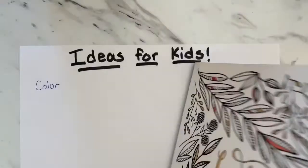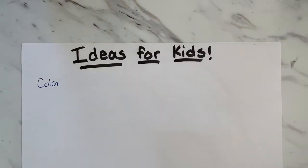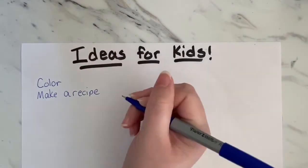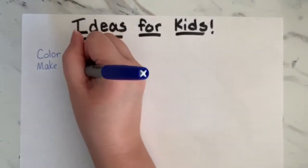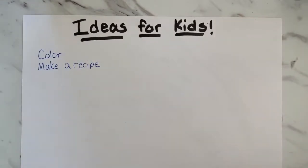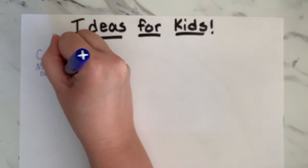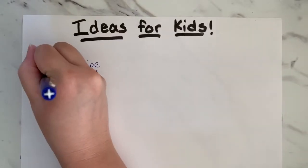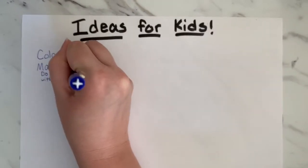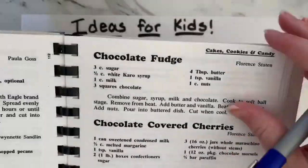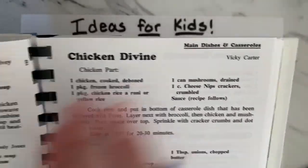Here are some ideas you can use. The first one is to color — you can color in a coloring book. Or you can make a recipe with your family. Remember, do not touch the stove if you do not have permission — make sure you ask first, or do it with your parents. It's also a really good opportunity to experience fractions and customary measurement.